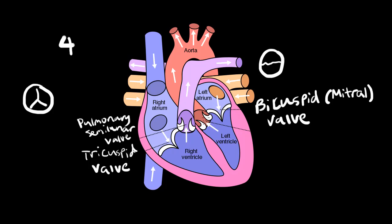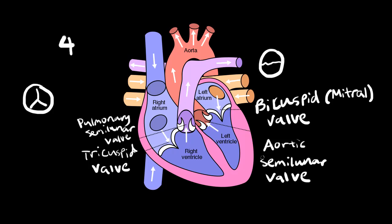Lastly, we have our fourth and final valve between the left ventricle and the aorta. This one is called the aortic semi-lunar valve, similar to the pulmonary one. This one also has three flaps. So the bicuspid valve is the only one with two flaps.